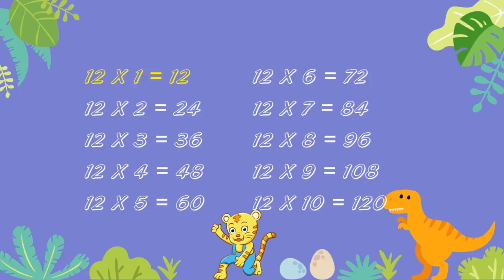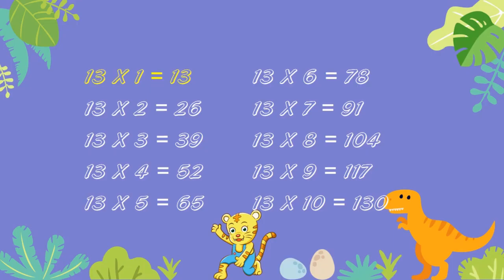12 ones are 12. 12 twos are 24. 12 threes are 36. 12 fours are 48. 12 fives are 60. 12 sixes are 72. 12 sevens are 84. 12 eights are 96. 12 nines are 108. 12 tens are 120.